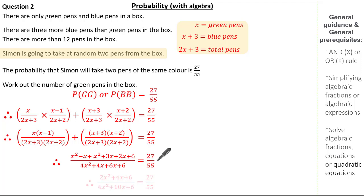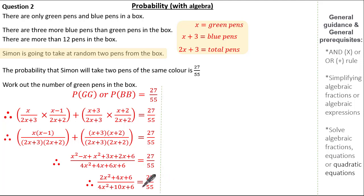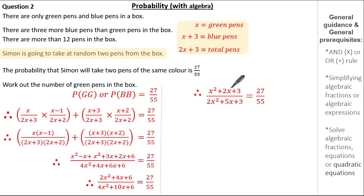Collecting like terms gives us (2X squared plus 4X plus 6) over (4X squared plus 10X plus 6). A nice trick when working with algebraic fractions is to take out a common factor — here each term is even, so dividing each term by 2 gives (X squared plus 2X plus 3) over (2X squared plus 5X plus 3). You don't have to do this, but it avoids big numbers.